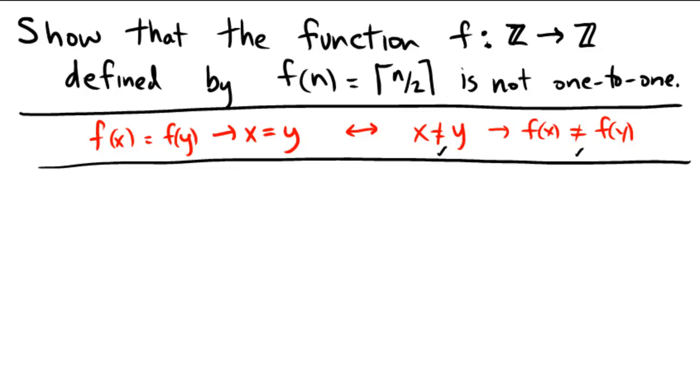The way that we're going to go about proving this and actually find our counterexample is let's take a couple numbers that we know and love here. Let's take the number 2. Notice, what is f of 2? f of 2 is equal to the ceiling of 2 over 2. 2 divided by 2 is 1, so we get the ceiling of 1.